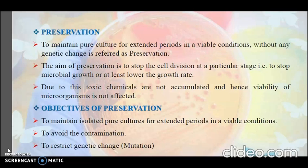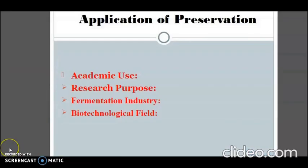The third objective is to prevent genetic change, that is mutation. The applications of preservation include academic use, research purposes, and use in the fermentation industry and biotechnological field, where pure cultures are needed for research and development. In industries, pure cultures are also needed for production purposes.